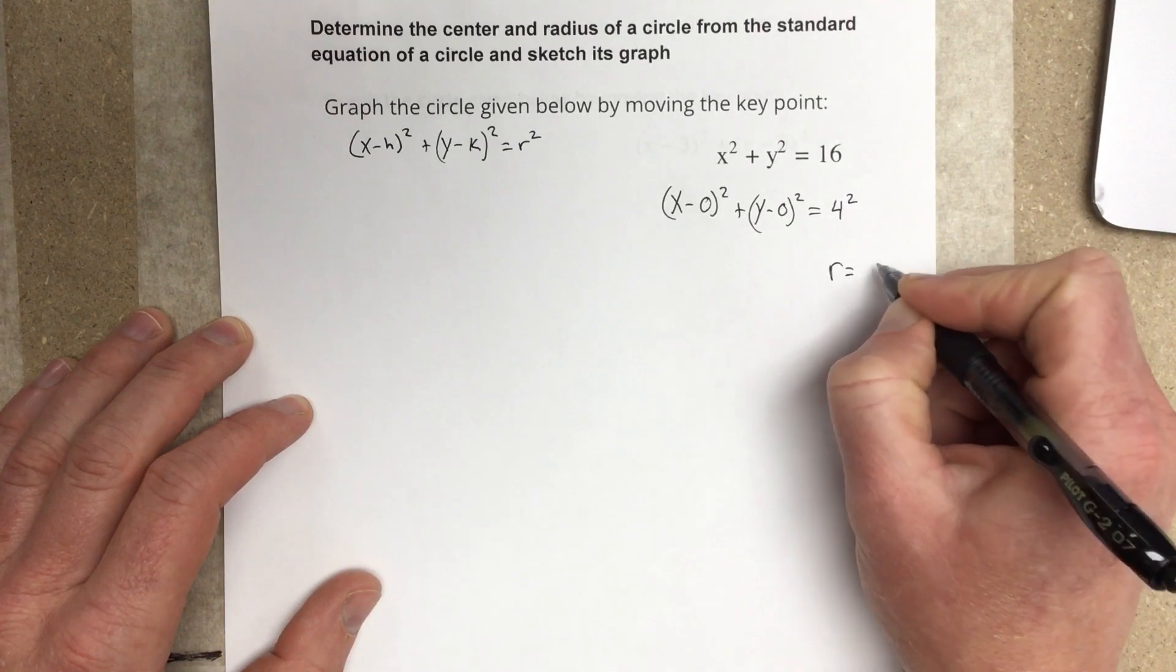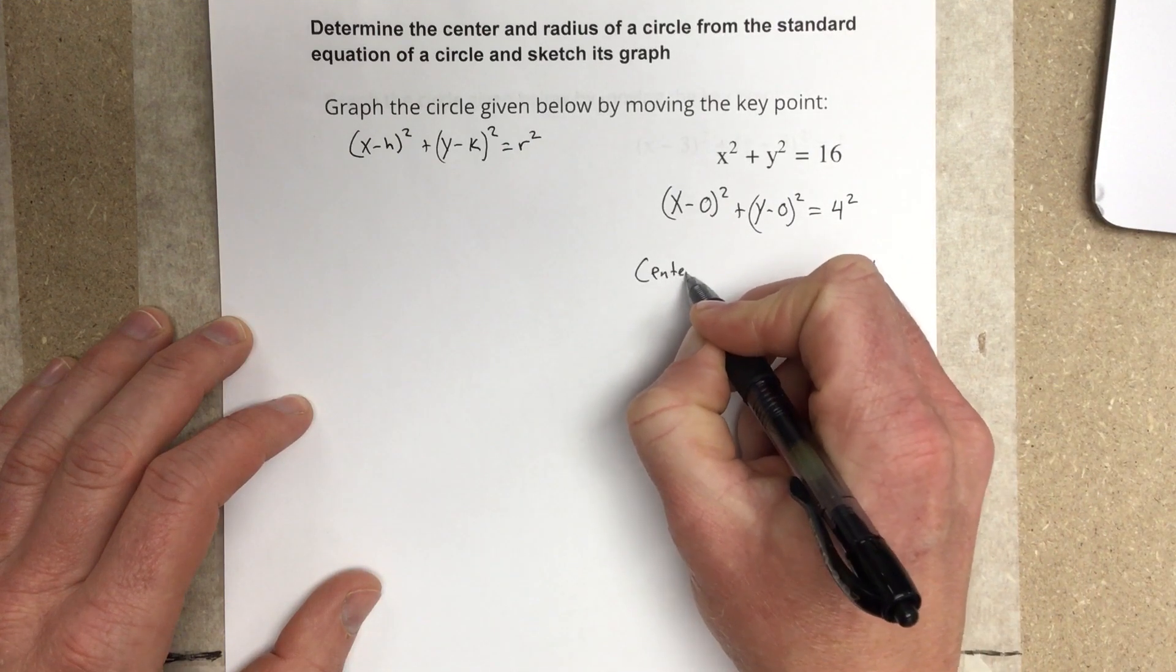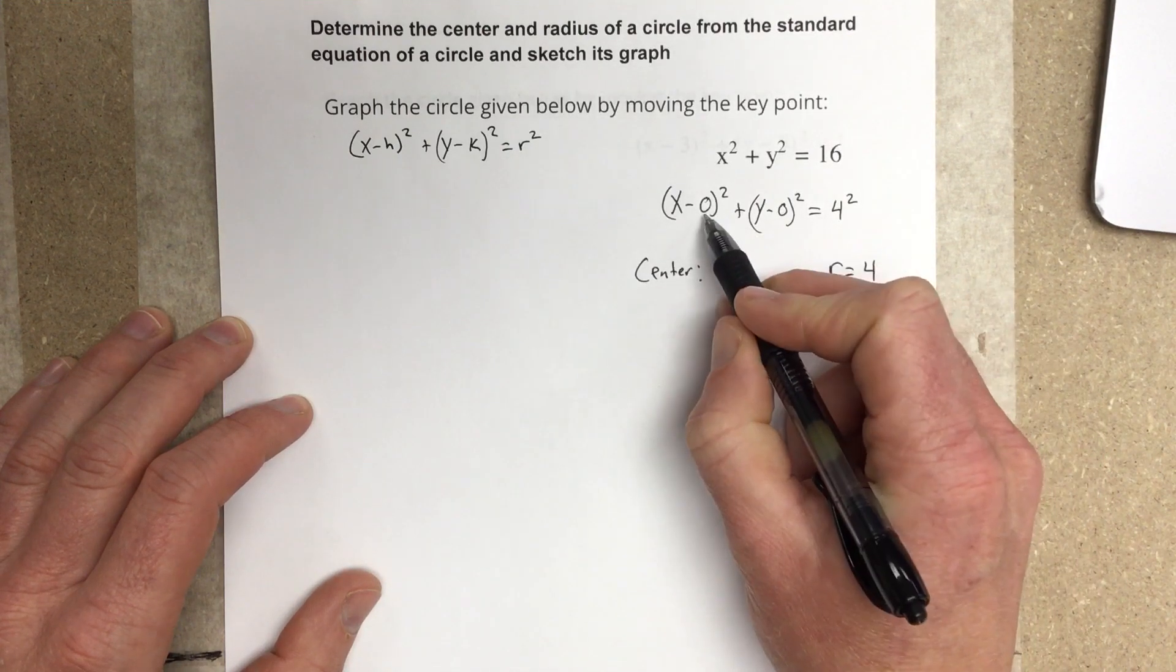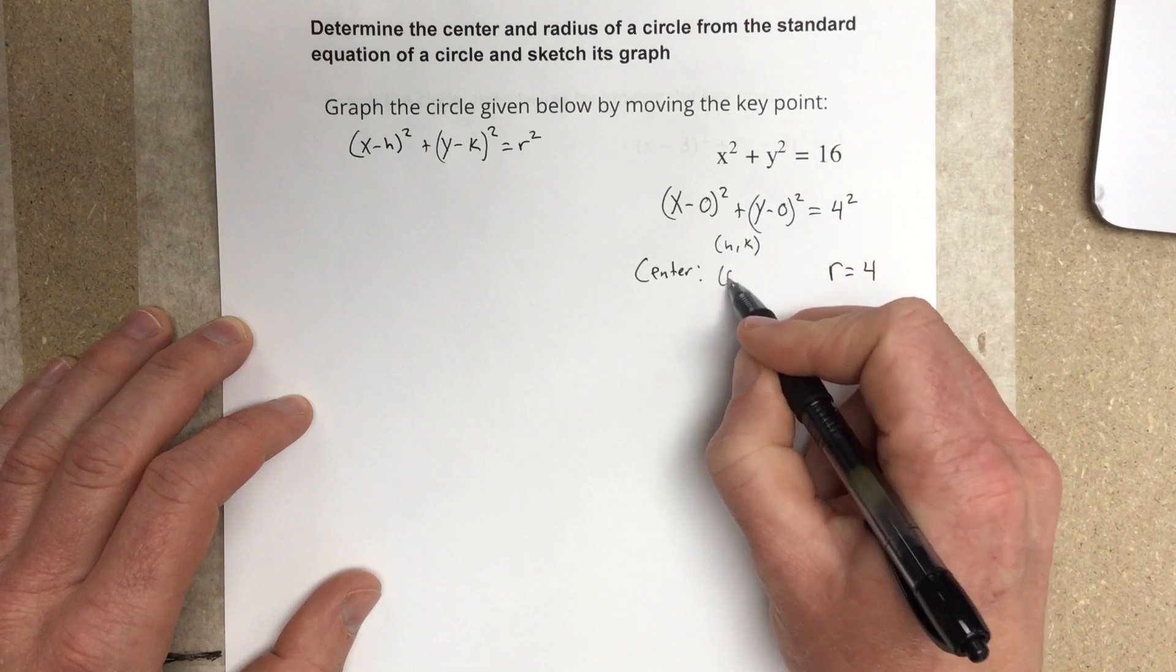I can say that my radius here is 4, and my center would be (h, k). I'll write h comma k, and the h and k are both 0, 0.